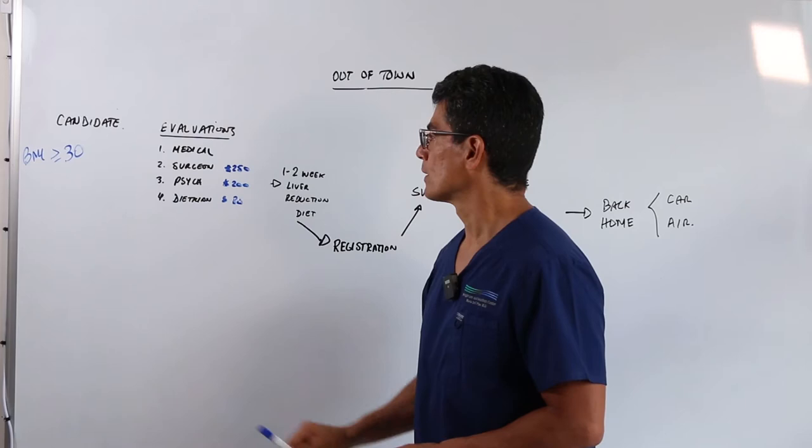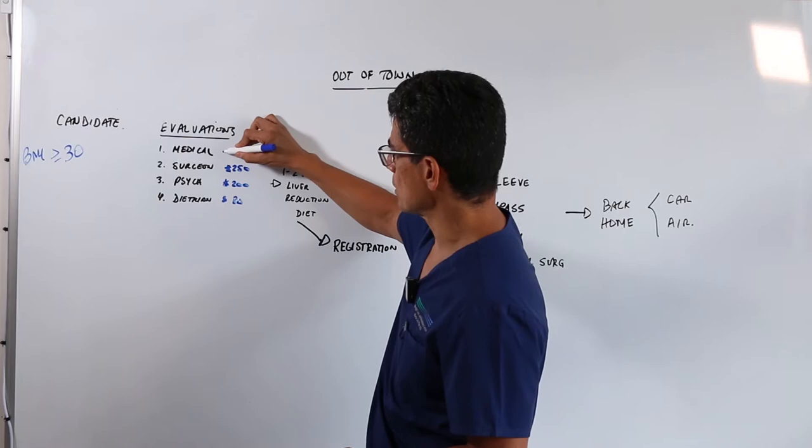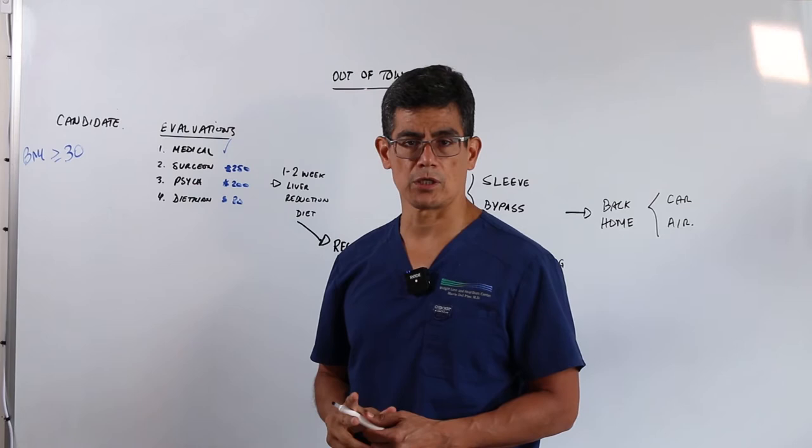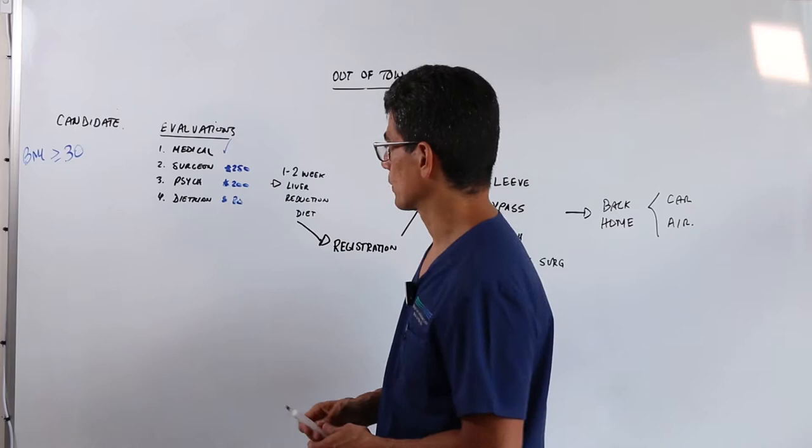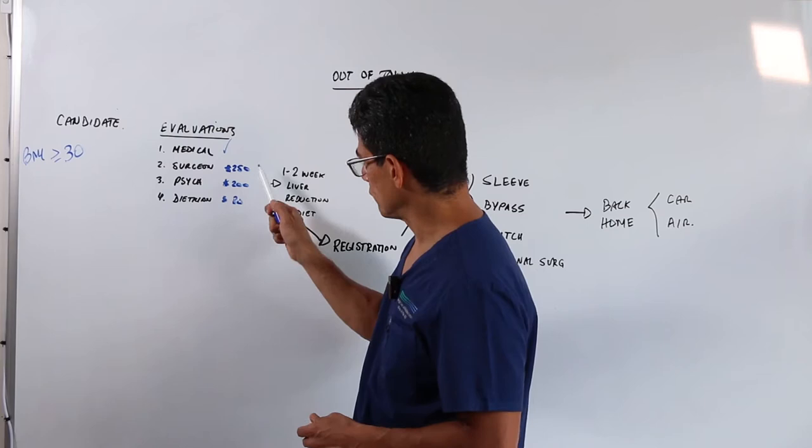You will need several evaluations, and the number one is a medical evaluation. We want to make sure that you're medically fit to have surgery under general anesthesia, and you will have to do it at home, preferably with your doctor who already knows you. Then you will set up an appointment with me on the phone. $250 is the cost of that evaluation.